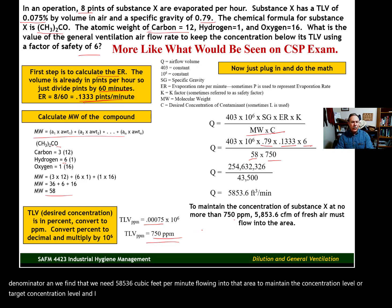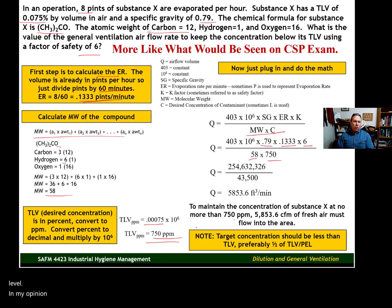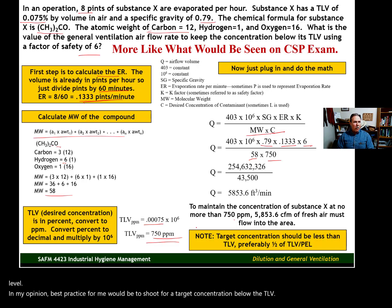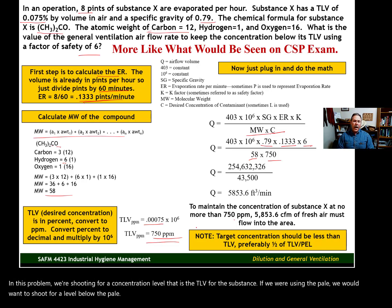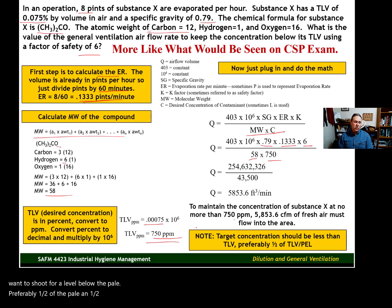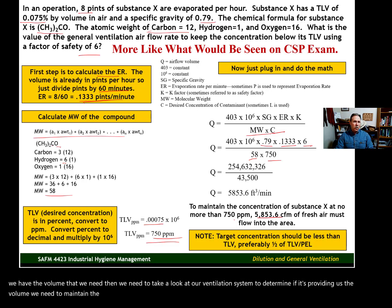I want to say something about using this formula and shooting for a target concentration level. In my opinion, best practice would be to shoot for a target concentration well below the TLV. In this problem we're shooting for a concentration level that is the TLV for the substance. If we were using the PEL, we would want to shoot for a level below the PEL — preferably one half of the PEL — and one half of the TLV would be a good objective for our ventilation system. Once we have the required volume, we need to evaluate our ventilation system to determine if it's providing the volume needed to maintain the concentration at or below our target.